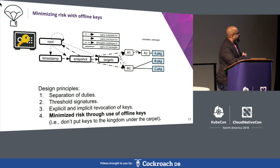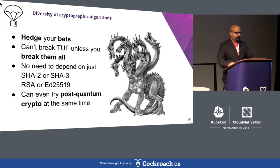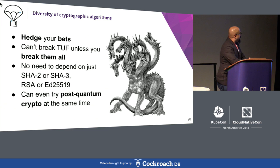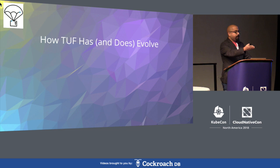Or as grandma would say, don't keep the keys to the kingdom under the carpet. Last but not least, one of the most overlooked design principles is that TUF allows for using a diversity of cryptographic hashing and signing algorithms, so that the compromise of any one of them is not sufficient to cause total failure. You could even try post-quantum cryptographic schemes at the same time. Now let me hand it off to Justin, who is also the consensus builder for the TUF project, to talk about how it has and does evolve.